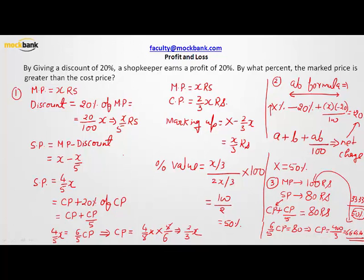If one doesn't know anything, one can solve the problem using method number 1. To solve using method number 2, one has to know the AB formula. For method number 3, one doesn't need to know the AB formula, but one has to be very good with the calculation part.